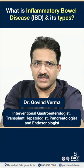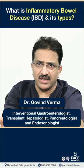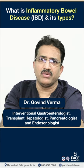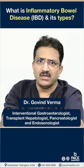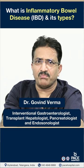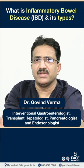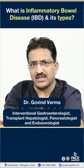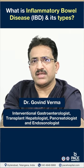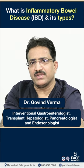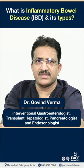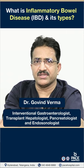Another difference is the extent of involvement. In Crohn's disease, it involves the entire layers of the gut — this is called transmural involvement — and the involvement is usually patchy, referred to as skip lesions. In ulcerative colitis, the involvement is continuous. Based on the extent of disease, patients can have different presentations, severity, and complications.